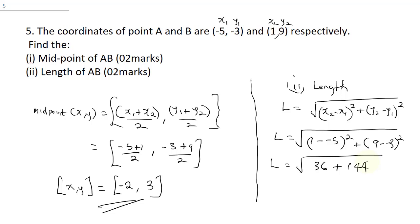So, from here, we can now do L will be equal to square root of, when you sum these two up, you are going to get 180, and L will be, square root of 180 is going to give us 13.416, so that's our final answer. Thank you.